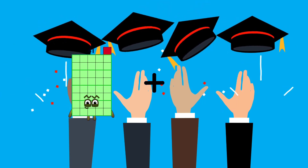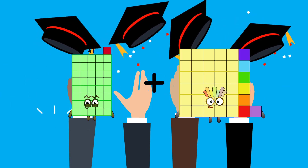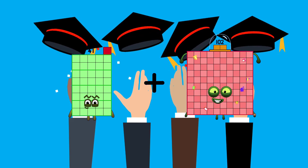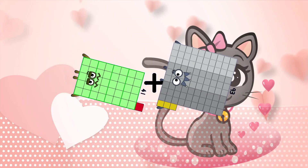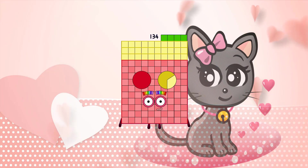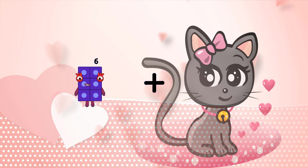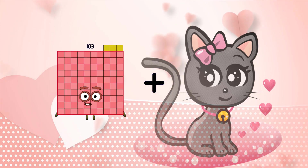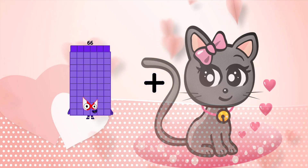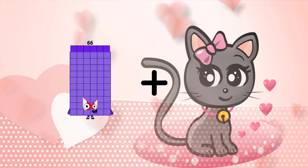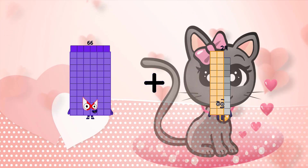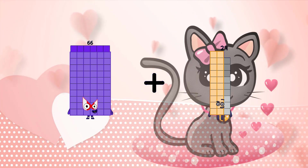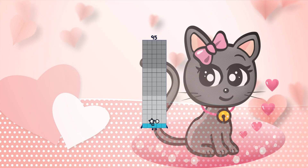41 plus 93 equals 134. 66 plus 29 equals 95.